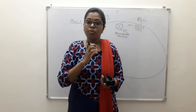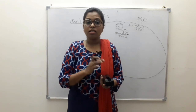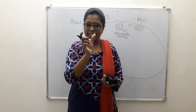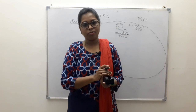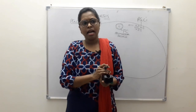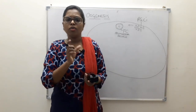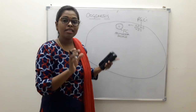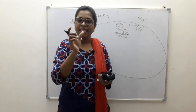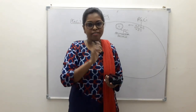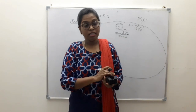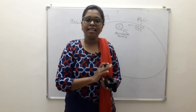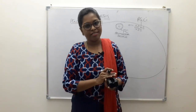So many oogonia are not required — they are not essential for the entire reproductive lifespan of a woman. Actually, only around 400 to 500 follicles are utilized in the reproductive lifespan. All the rest will die and become atretic.